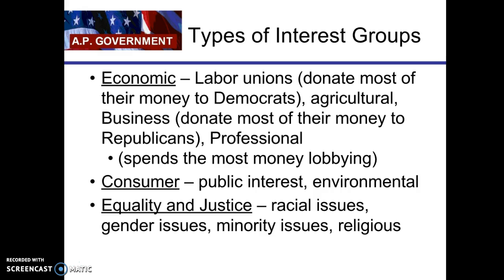There are really five types of interest groups outlined in the textbook. Economic interest groups include labor unions, agricultural groups like the soybean lobby, professional economic interest groups, and businesses. Public interest groups — also called consumer interest groups — believe they represent the entire public, the general good. And there are equality and justice interest groups, which tend to focus more on race, gender, and religious issues. Most equality and justice interest groups also tend to be single-issue interest groups.